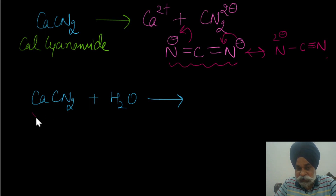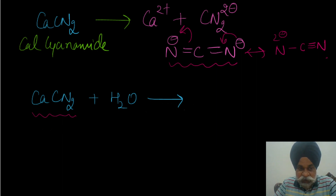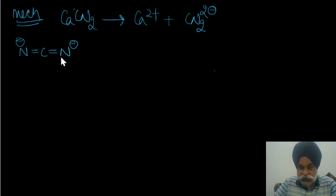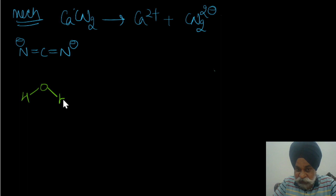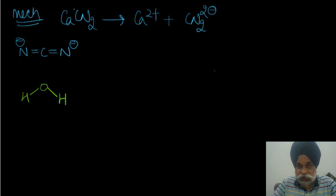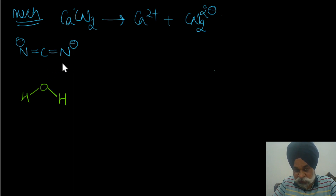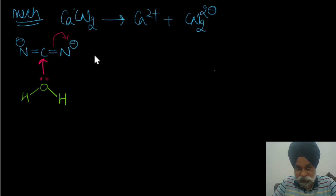If you already know the product of hydrolyzing the cyanamide ion with water, the question is easy. If not, we can interpret it through a mechanism just like we do in organic chemistry — similar to the hydrolysis of imines. This reaction requires good heating because replacing nitrogen with oxygen in the system is a difficult process. First, water attacks the cyanamide ion.